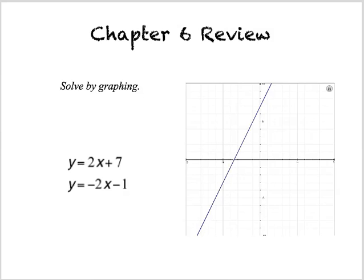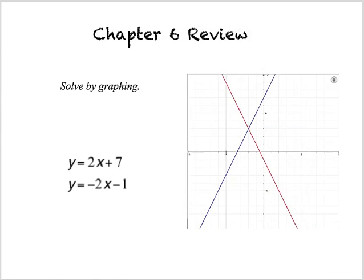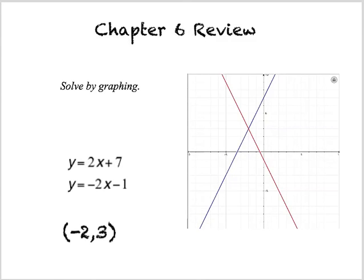The other line, y = -2x - 1, I'll graph in red. The important thing to remember: in a system of equations, the point of intersection is the solution. I see it right there at x = -2, y = 3, so we write the ordered pair to show the solution.